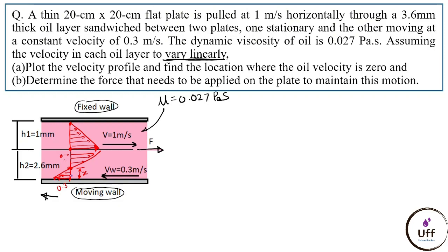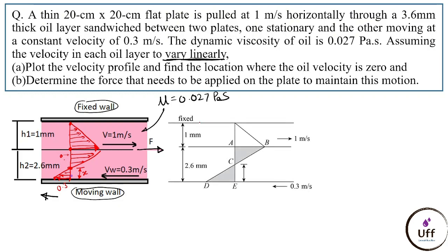To find x, a diagram is drawn with the same setup. The velocity profiles are represented as triangles — the lines indicate the velocity profile. Points are named A, B, C, D, and E. If the distance CE is x, then the distance AC is 2.6 minus x mm. Triangles ABC and CDE are similar triangles, so we apply the rule: AB divided by DE equals AC divided by CE.